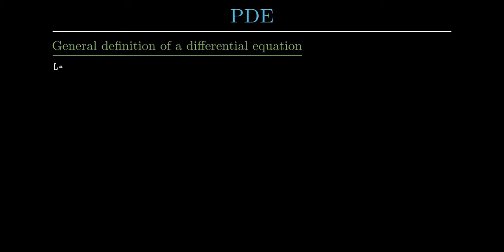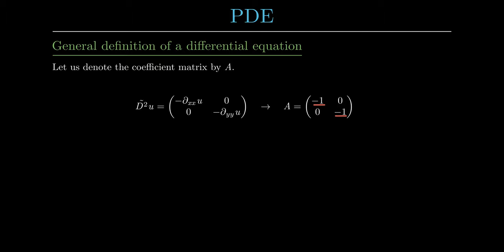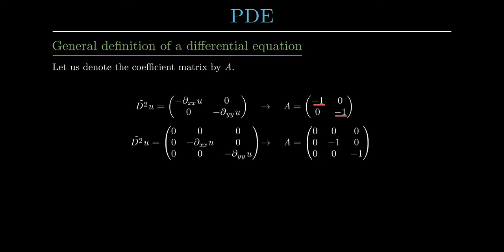We now compare the coefficient matrices A of these last three PDEs and classify them by looking at the eigenvalues. The coefficient matrices are simply matrices containing the coefficients in front of the second derivatives in the modified Hessian matrices. Since these coefficient matrices are diagonal, we only need to look at the sign of the diagonal entries to determine the signs of the eigenvalues. The coefficient matrix of the Laplace equation has minus ones on the diagonal. When all diagonal entries have the same sign, we are dealing with an elliptic PDE.